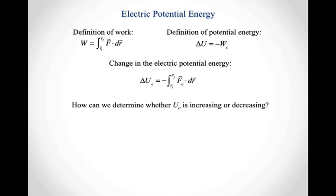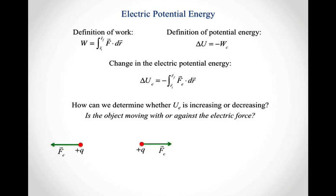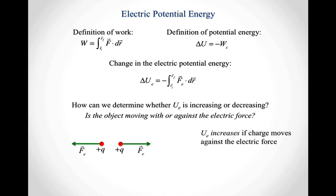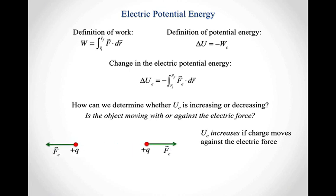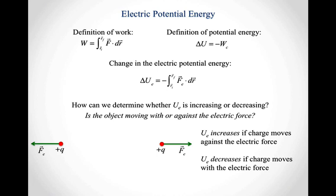How can we determine whether the electric potential energy is increasing or decreasing? We want to know whether the object is moving with or against the electric force. If I take two positive charges, I know they're going to repel each other, so there are electric forces on each pointing away from the other charge. If I bring them together, moving them opposite to the direction the electric force is pushing, the electric potential energy increases. If instead the charges move away from each other, they're moving in the direction the electric force is pushing them, so the electric potential energy decreases.